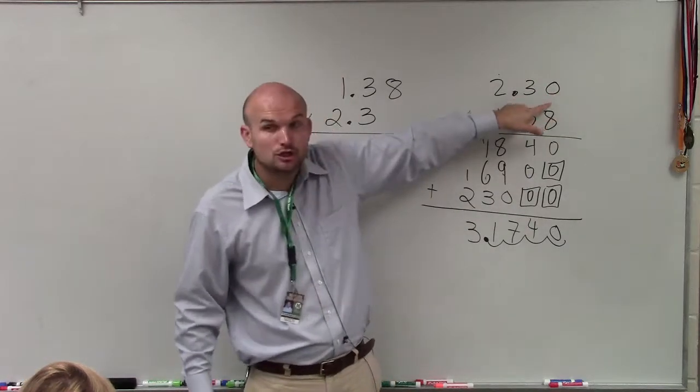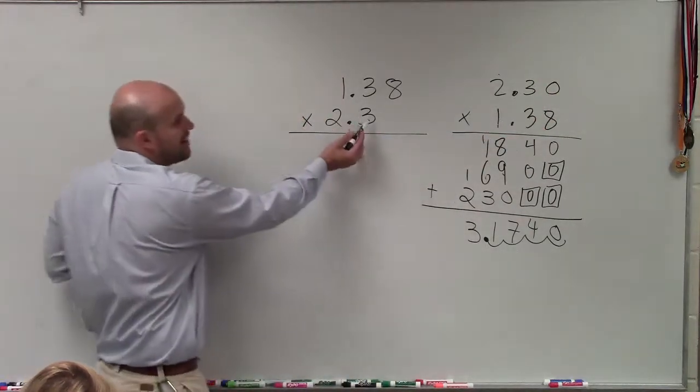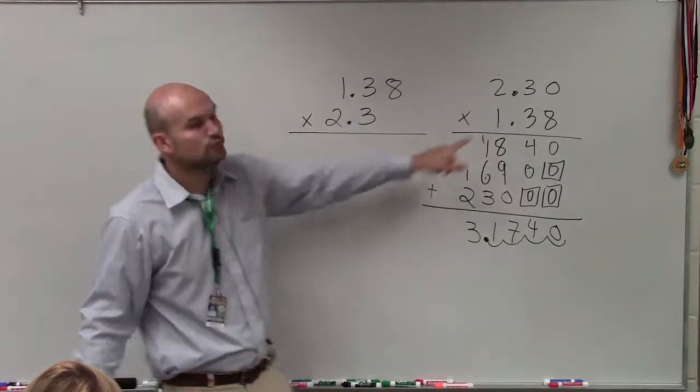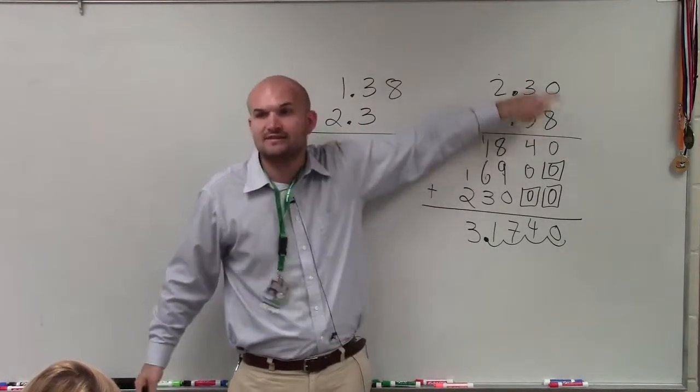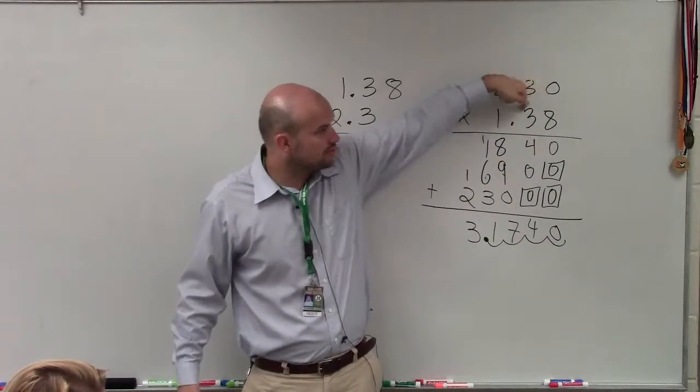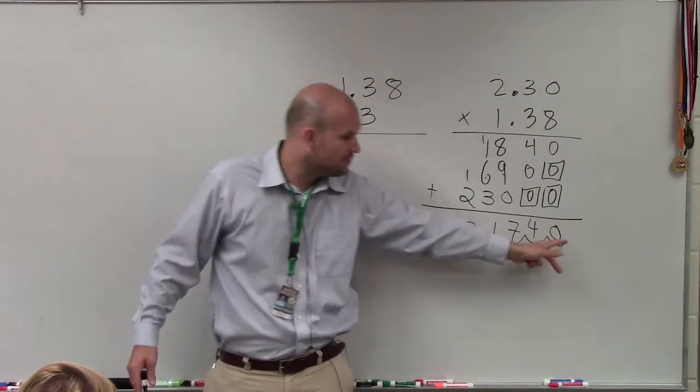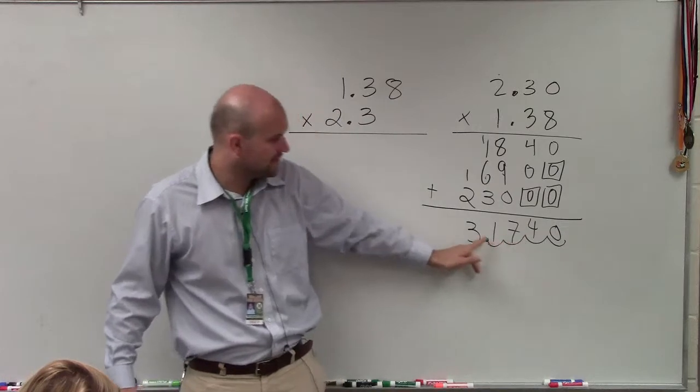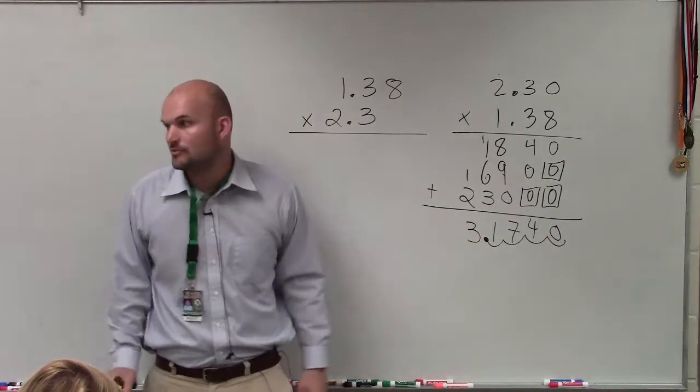Now remember, I included that 0, right? Because the original problem didn't have a 0 there. So I wrote in that 0 to make sure that everything had something to multiply by. So therefore, there's 1, 2, 3, 4. That's why I moved 1, 2, 3, 4 spaces over to give me 3.17.